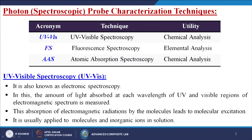So first we are going to discuss about the photon spectroscopic probe characterization techniques. Generally three characterization techniques come under this: one is called UVVis, that is UV visible spectroscopy, generally we are using it for chemical analysis. Another one is called FS or fluorescent spectroscopy, we are using it for elemental analysis. Another one is called AAS, that is atomic absorption spectroscopy, that is for the chemical analysis of materials.